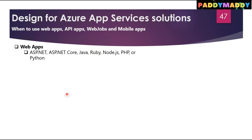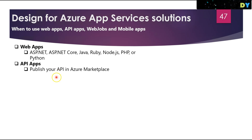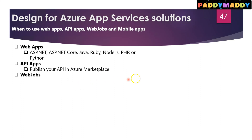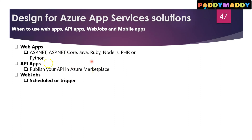For APIs, much like hosting a website, you can build REST-based web APIs using your choice of language and framework. You get full Swagger support and the ability to package and publish your APIs in Azure Marketplace. The produced apps can be consumed from any HTTP or HTTPS clients, giving you full flexibility on the API app side.